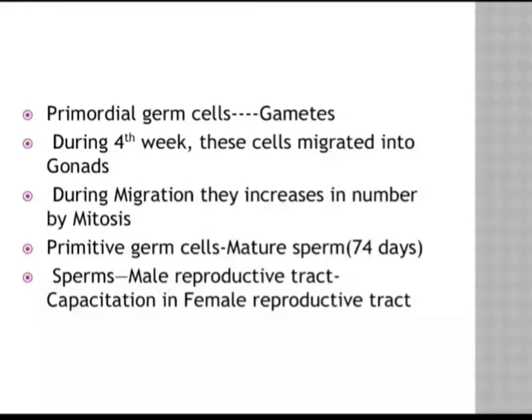All kinds of matured gametes, whether sperm or ovum, are generally developed from their mother cell, which is called a primordial germ cell. If it is a sperm, we say the mother cell is the primordial sperm mother cell. If it is an ovum, we say primordial egg cell. From these, the matured sperms develop.